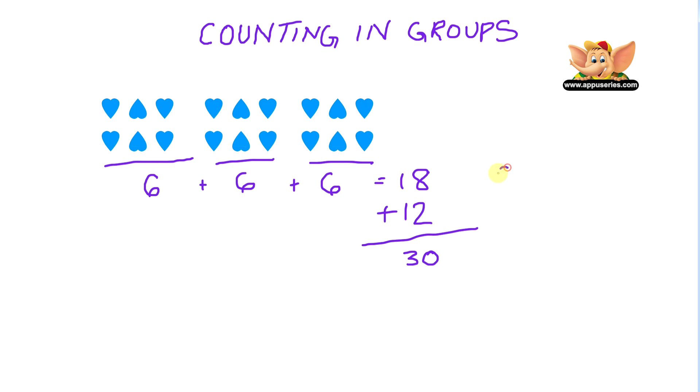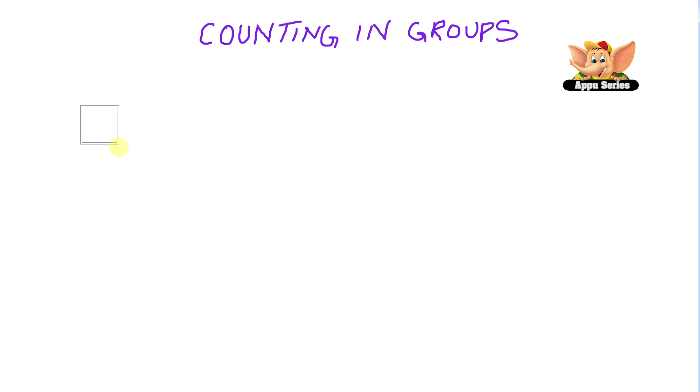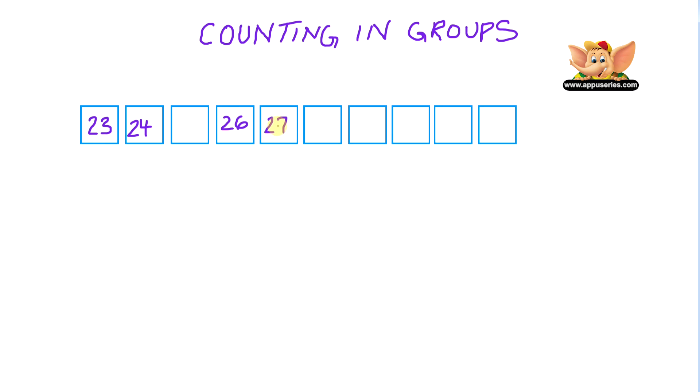Counting in a line. Let's see how to count in a line. This is real simple as you already know the order of numbers. Now here I'm going to write a row of numbers with a few numbers missing from its place. So let's do that. Can you identify the missing numbers?